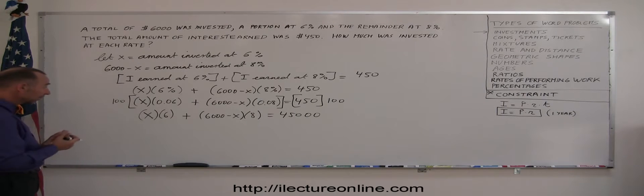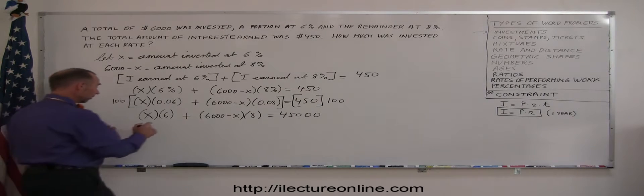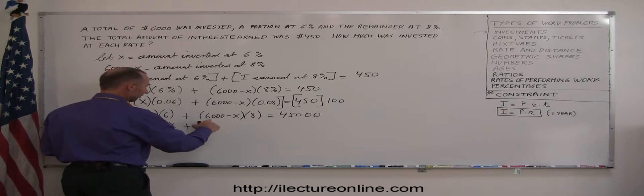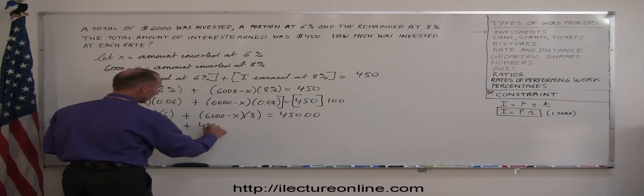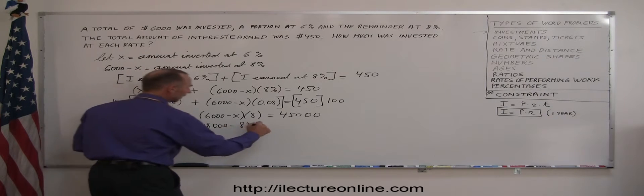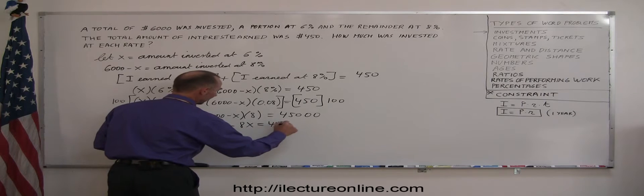Now, we'll go ahead and get rid of the parentheses and multiply everything together. So, this is 6X plus 8 times 6,000 is 48,000 minus 8 times X is 8X, and that equals 45,000.